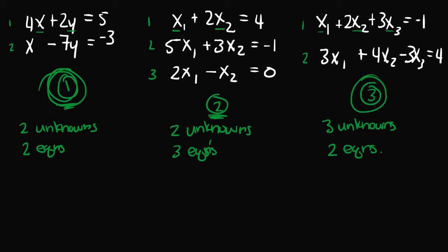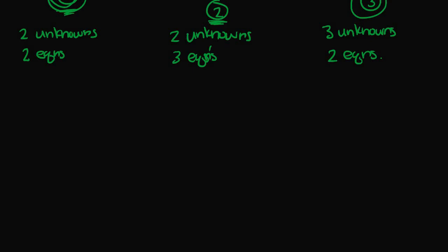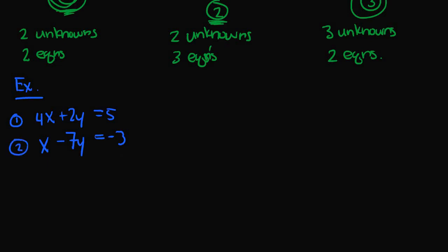These are the different scenarios we can have with a system of linear equations. We can use a system of linear equations to determine if a solution set is valid. For example, given the system 4x plus 2y equals 5 and x minus 7y equals negative 3, we want to determine if the solution set x equals 11 and y equals 2 satisfies this system.